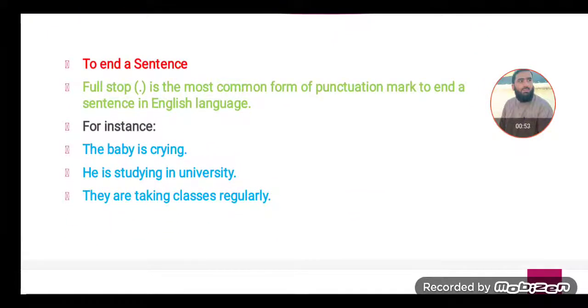The first use of the full stop is to end a sentence. Full stop is the most common form of punctuation mark that is used to end a sentence or that is used at the end of a sentence in English language. For instance, the baby is crying. It's a full sentence, so we are using at the end of the sentence full stop or period. When a message is completed, when a sentence is complete, then we use full stop or a period.